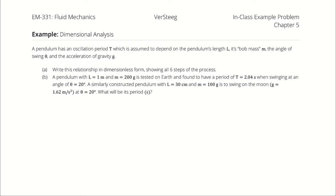A pendulum has an oscillation period which is assumed to depend on the pendulum's length, its bob mass, the angle of its swing, and the acceleration of gravity. The first thing we want to do is write out the relationship in a dimensionless form following the six steps of the Buckingham Pi theorem.